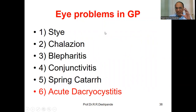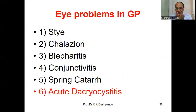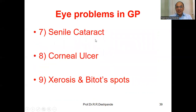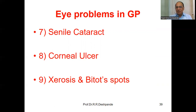In this series I have already discussed stye, chalazion, blepharitis, conjunctivitis, and spring catarrh — uploaded in two parts. Please take the effort to see those videos. Today I am going to discuss acute dacryocystitis, senile cataract, corneal ulcer, and xerosis with Bitot's spots. The family physician can diagnose, see the symptoms, and treat these problems in general medical practice.